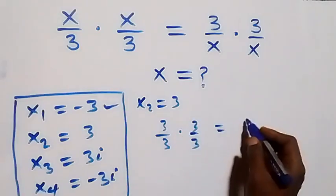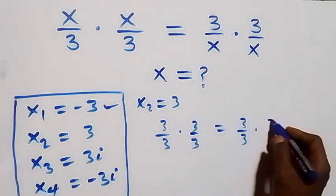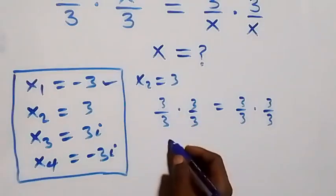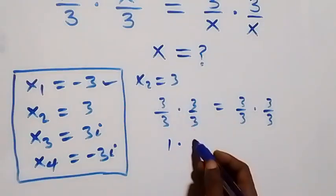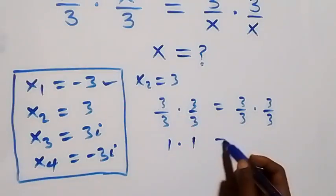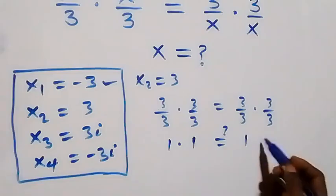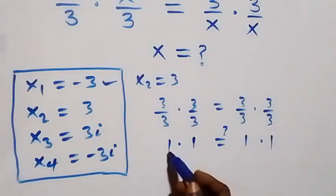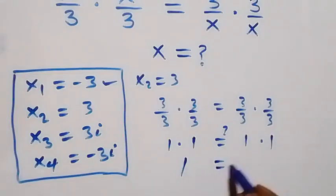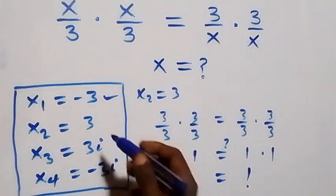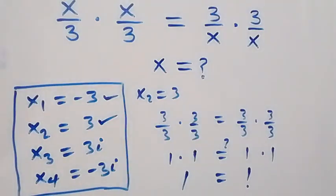When x equals three: this becomes three over three times three over three, equals three over three times three over three. Three over three is one, times one, equals one times one, that's one. Left hand side equals right hand side, so x equals three also satisfies the given problem.